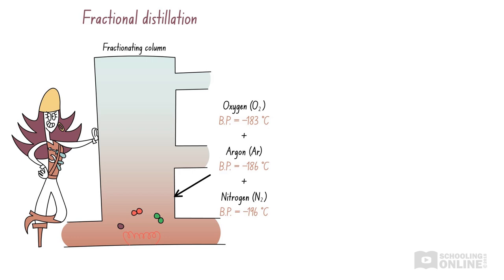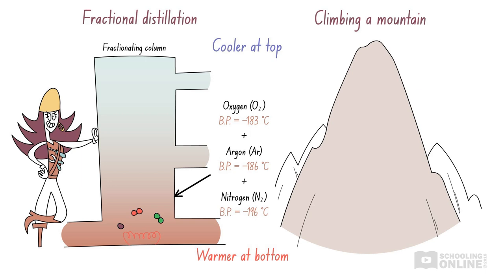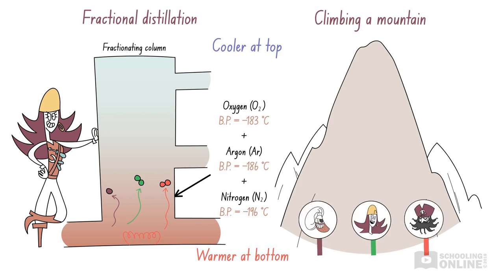She connects a fractionating column to the container, then she gently warms the mixture. Remember, the fractionating column is warmer at the bottom and colder at the top, just like a mountain. As the liquid oxygen, argon and nitrogen warm up, they evaporate and turn into a gas, then they climb up the fractionating column. This is just like the pirates climbing up the mountain. In this case, we have three gases climbing up the fractionating column, so let's consider a scenario where three pirates are climbing up the mountain. Cookie the chef is joining the expedition.